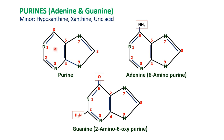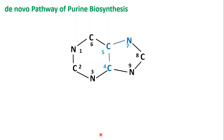Purines have a characteristic ring structure. The major purines are adenine and guanine. Adenine is 6-amino — there is an amino group on the 6th position. For guanine, on the 2nd position there is an amino group and on the 6th position it is oxy. Different compounds contribute to the skeleton of the purine ring.